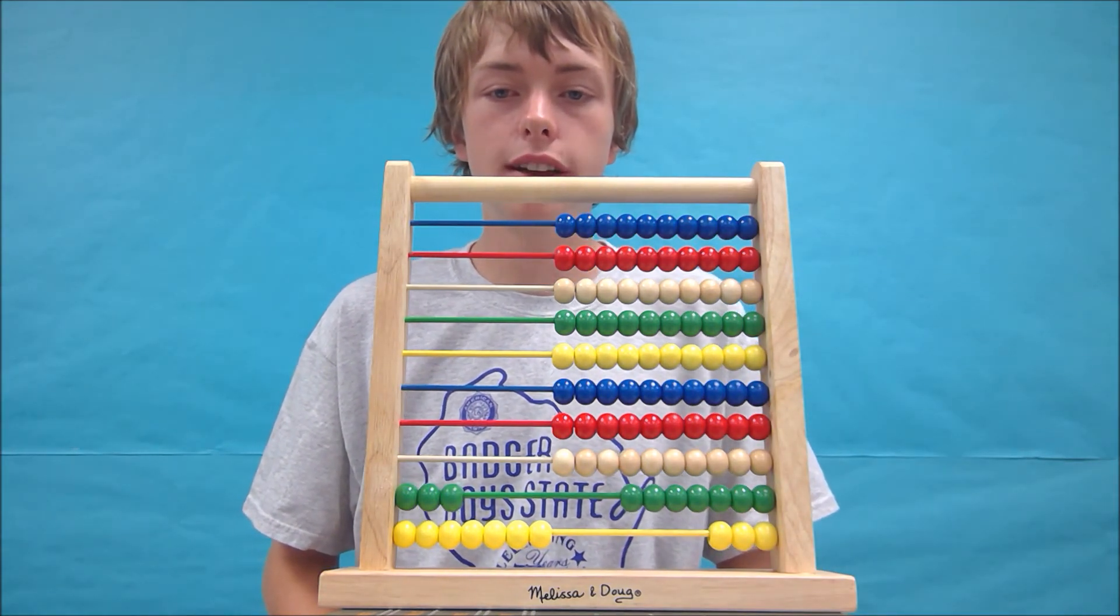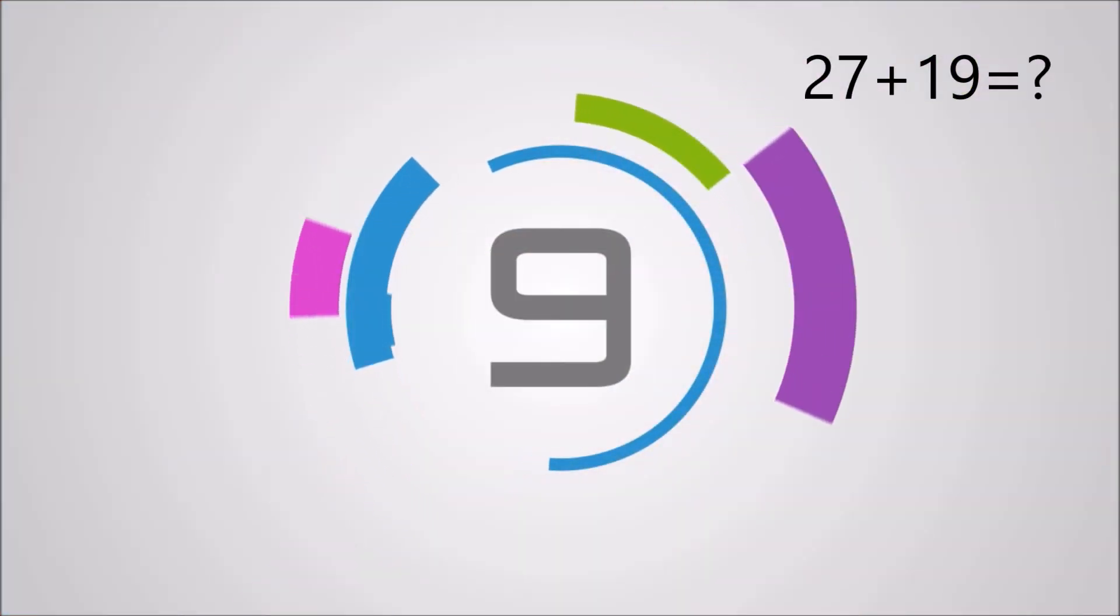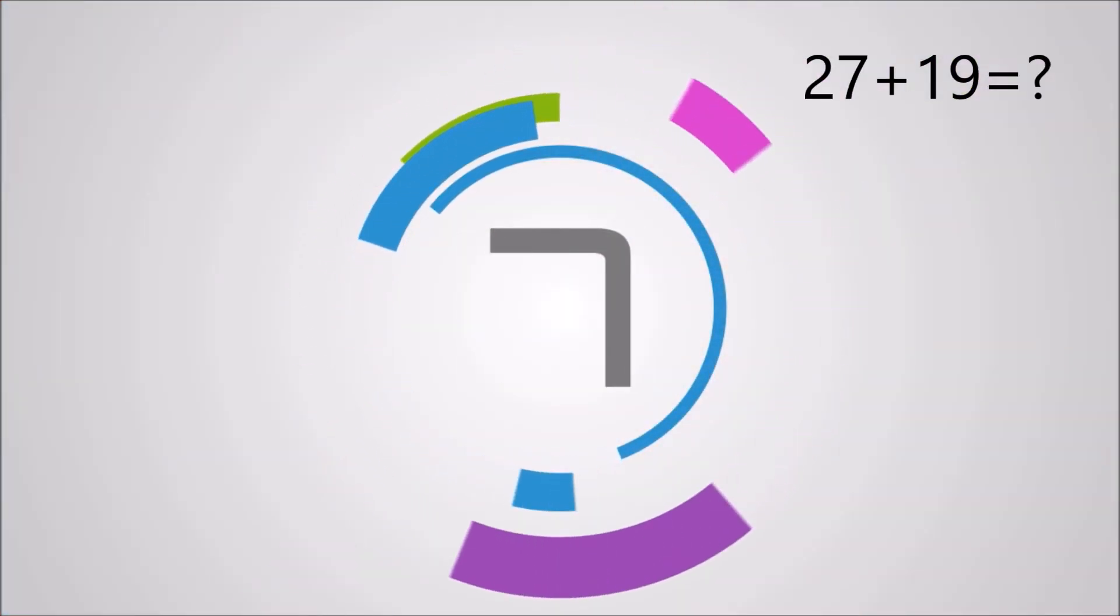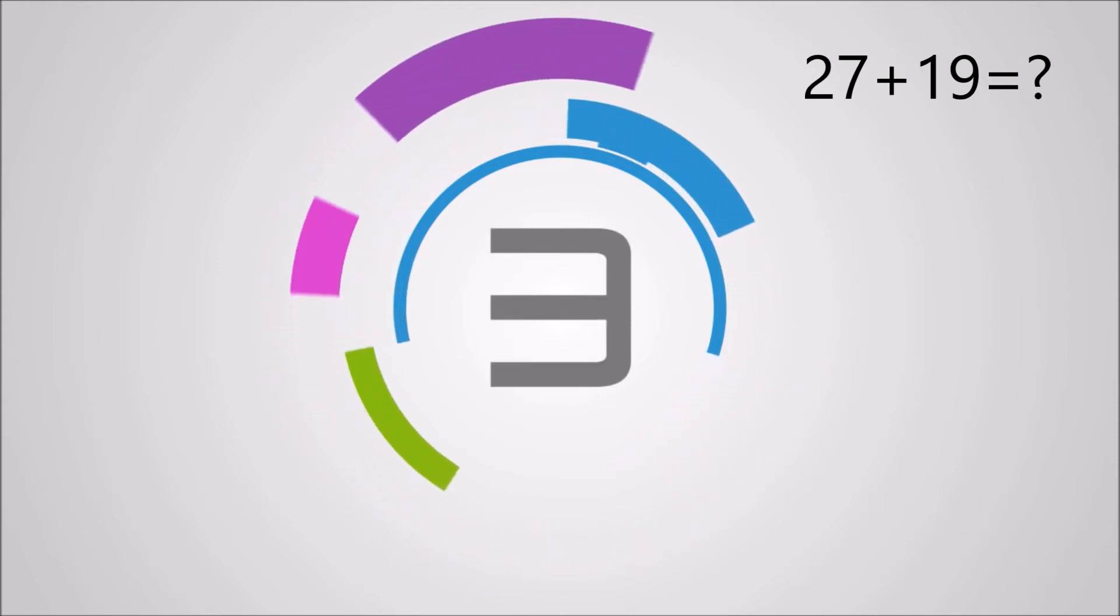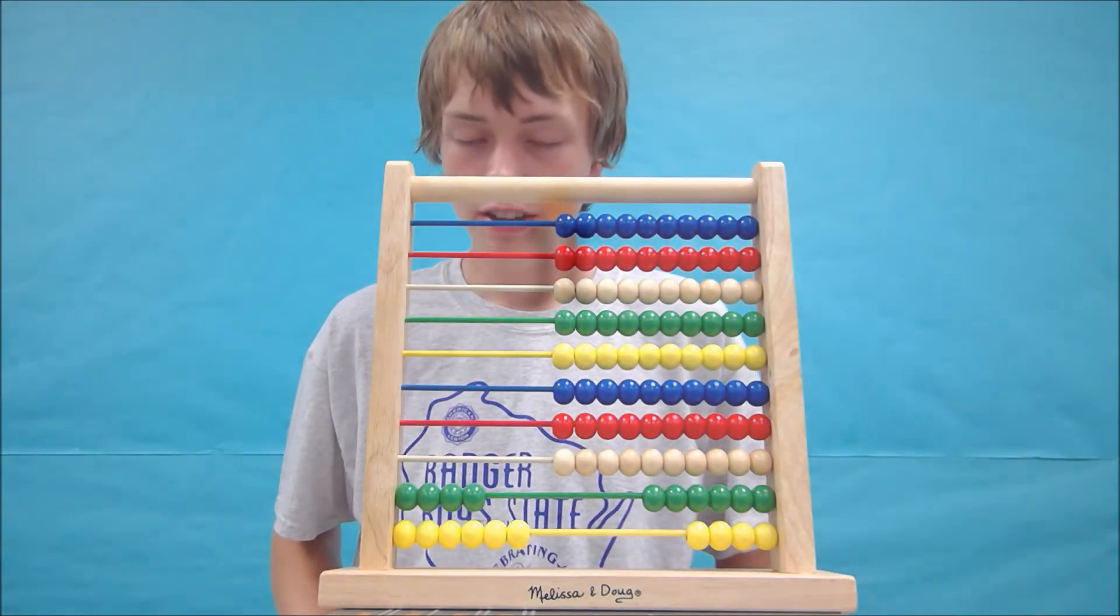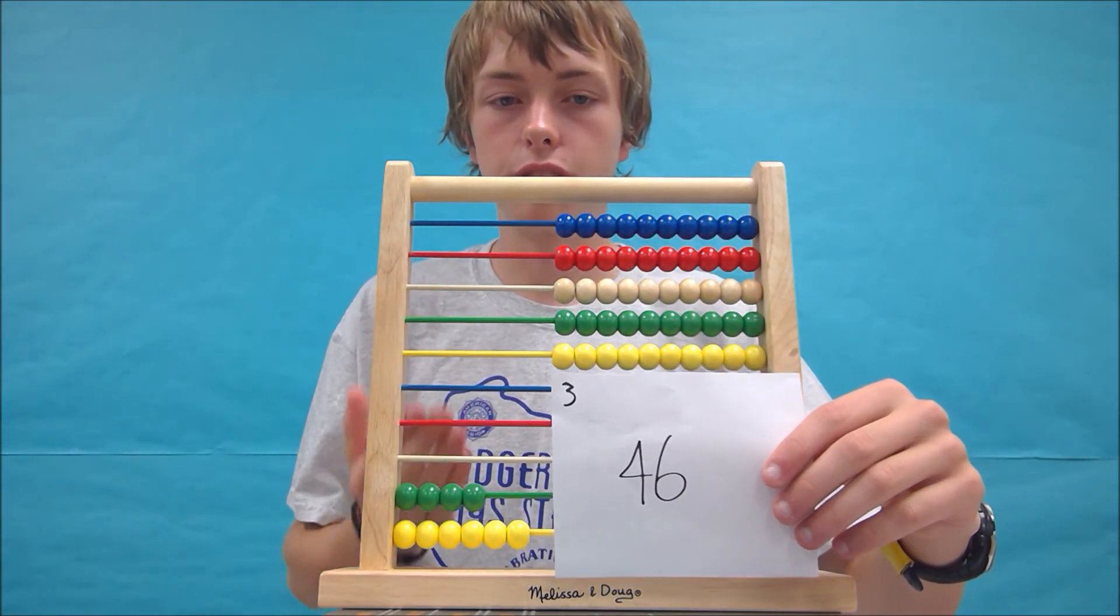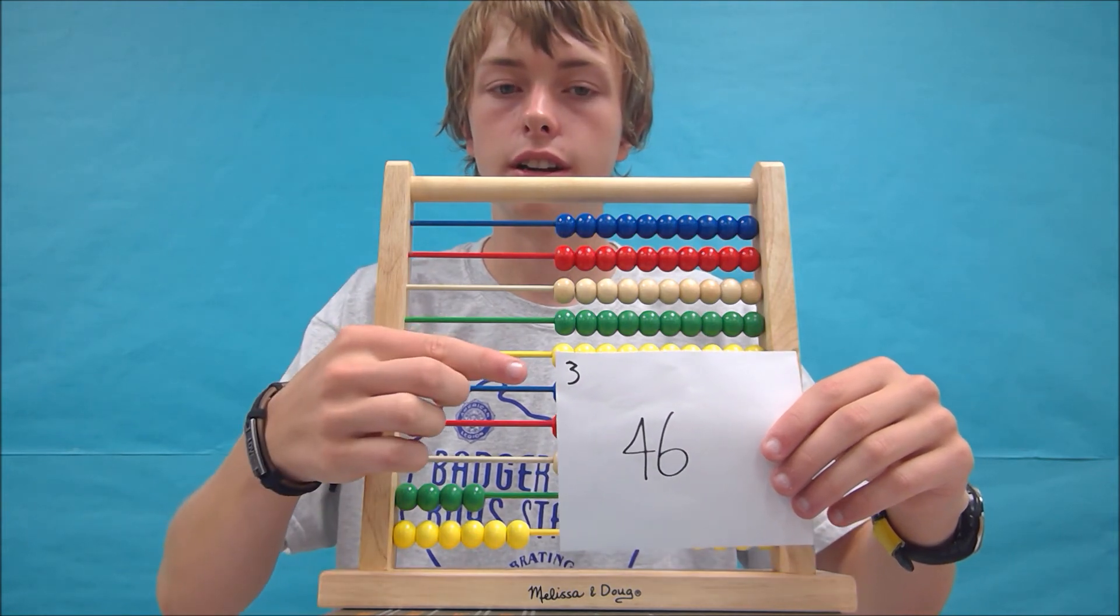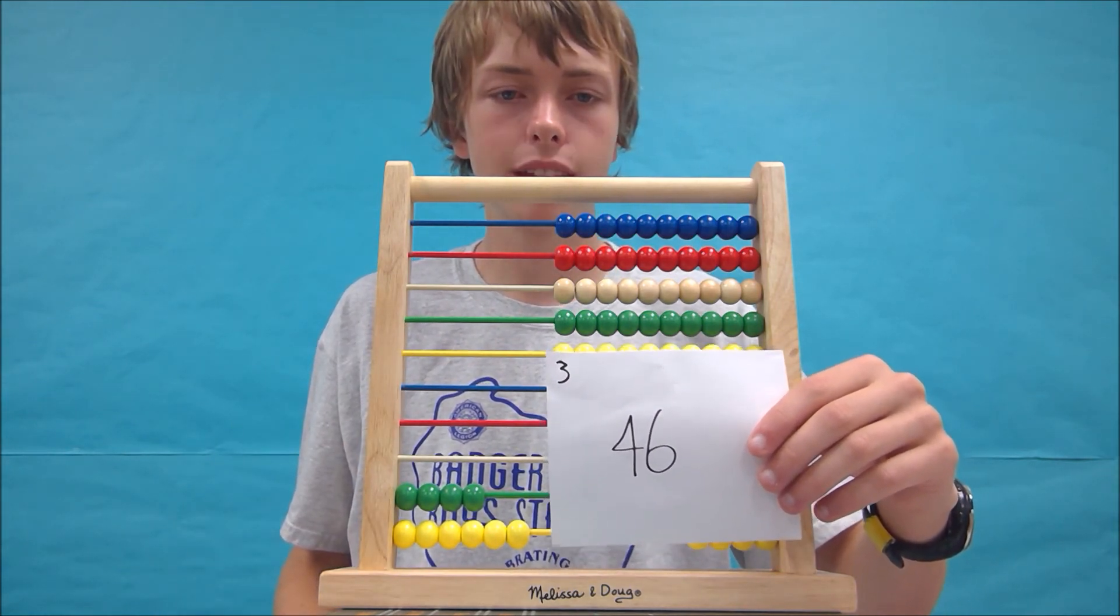Now let's solve 27 plus 19. Your answer should be 46, and your abacus should look like this. My notes again are on the corner, so you can see that. Did you get it? Well done.